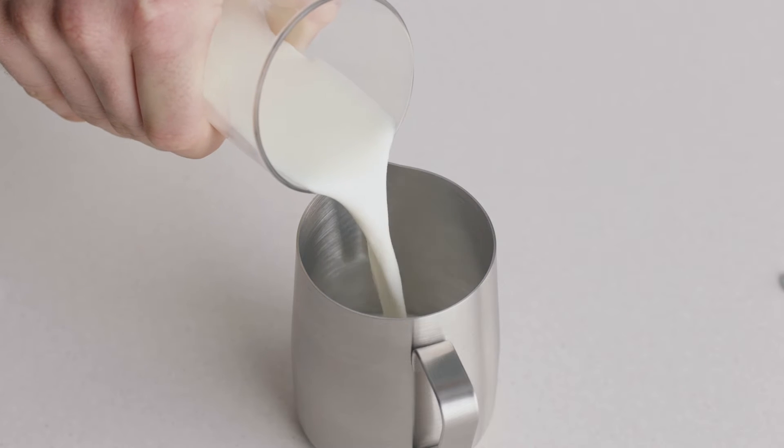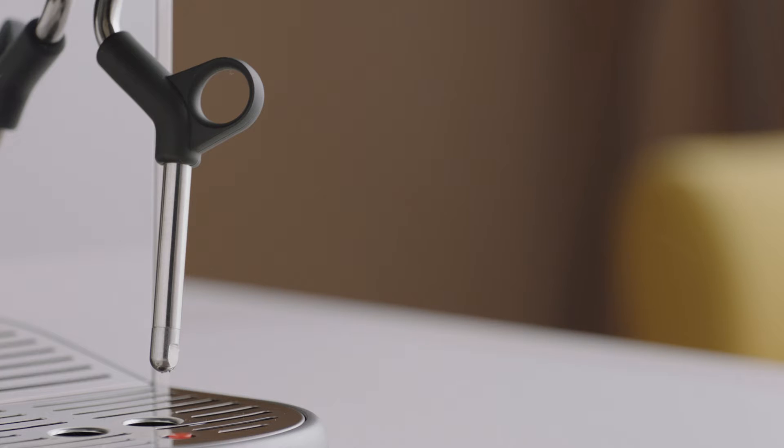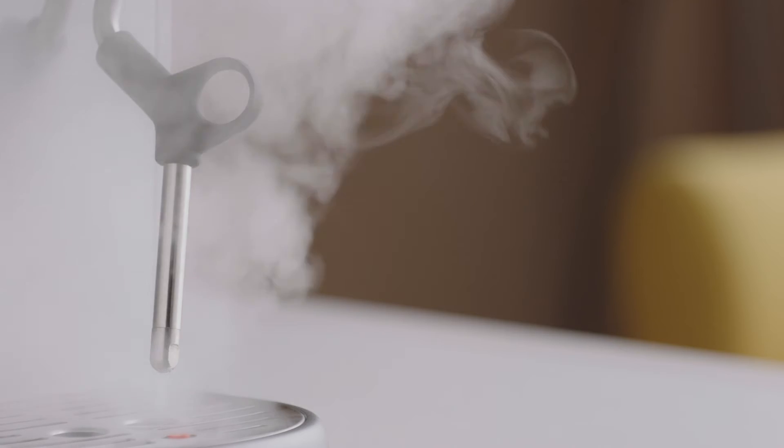Begin with fresh cold milk. Fill the milk jug to just below the spout. Position the steam tip over the drip tray and press the steam button. This will purge out any water that's condensed.